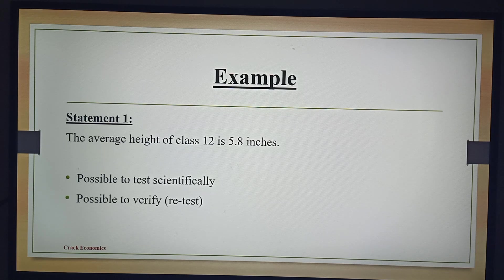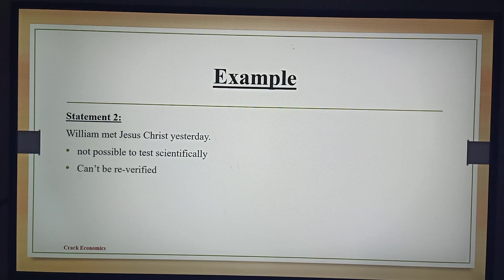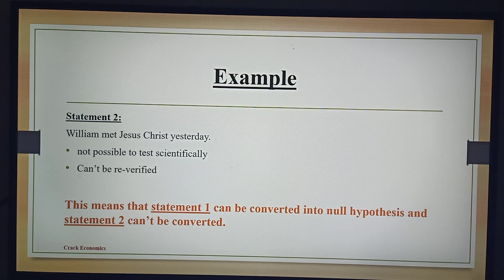The second characteristic is re-testability. It is also possible for some other person to re-test or verify this statement after some period of time with the same sample. So, this is Statement 2: William met Jesus Christ yesterday. Now, it is not possible to test this statement significantly, and also it is not possible to re-verify it. So, these two examples clearly show that Statement 1 can be converted into null hypothesis, and Statement 2 cannot be converted into null hypothesis.